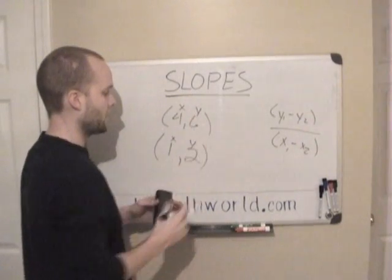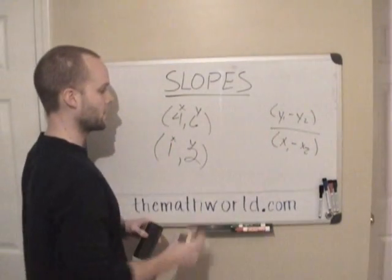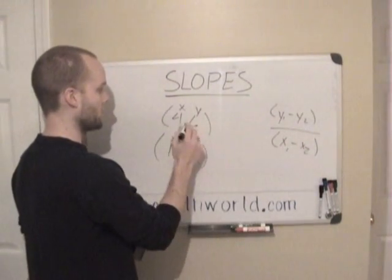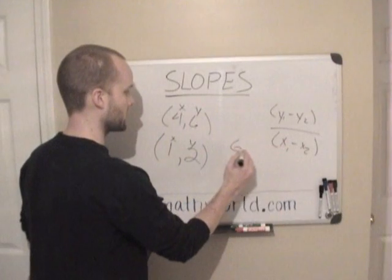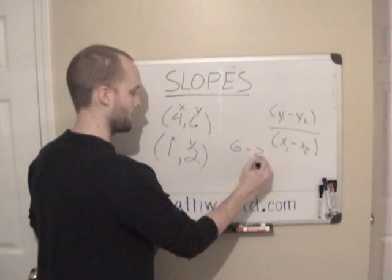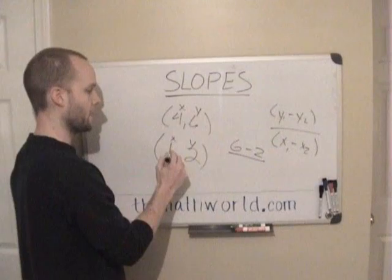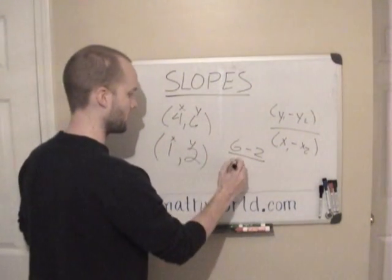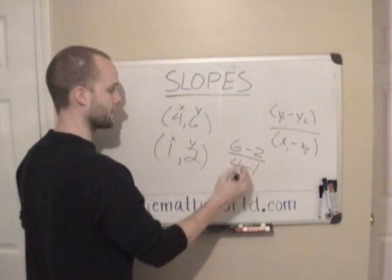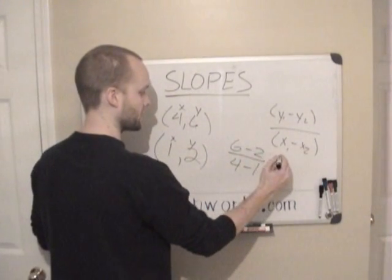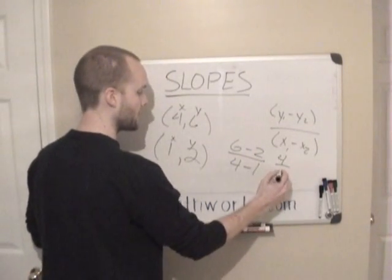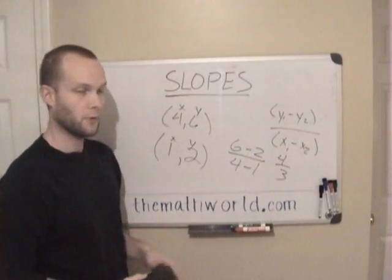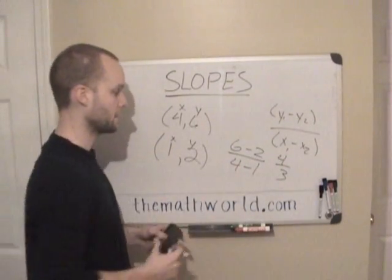So to keep things simple, I usually just put the larger numbers. Make sure that you do them accordingly, 1 and 1, so they both come from this one. But we'll do 6 minus 2 and then 4 minus 1. Make sure that you don't do 1 minus 4 since you did 6 minus 2. As you can see here, 6 minus 2 is 4 and 4 minus 1 is 3. So the slope of this line is 4 over 3 and this is the slope.